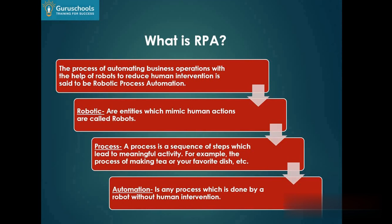Process means any meaningful process. For example, you are working on Excel, then you put the data into SAP ERP, extract the data, and put it into the database. Any process which we are doing on a daily basis that is repetitive in nature is called a process. Automation means any process done by a robot without human intervention. This is about RPA.